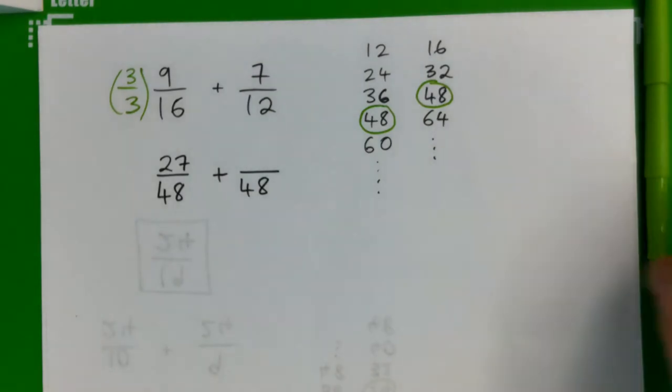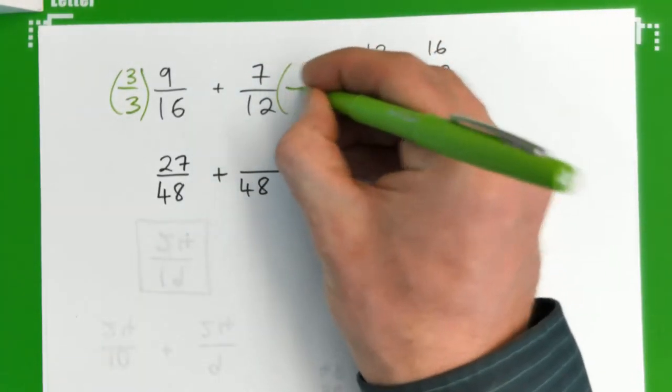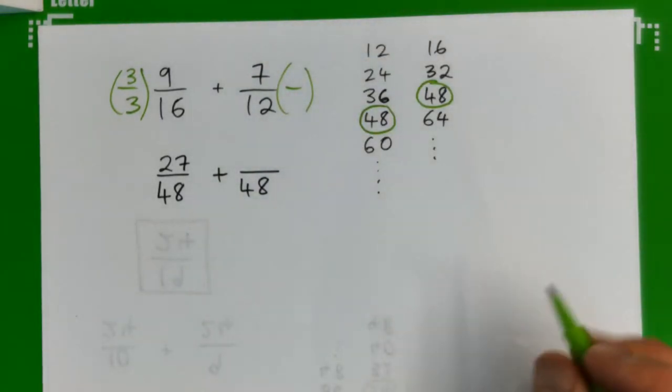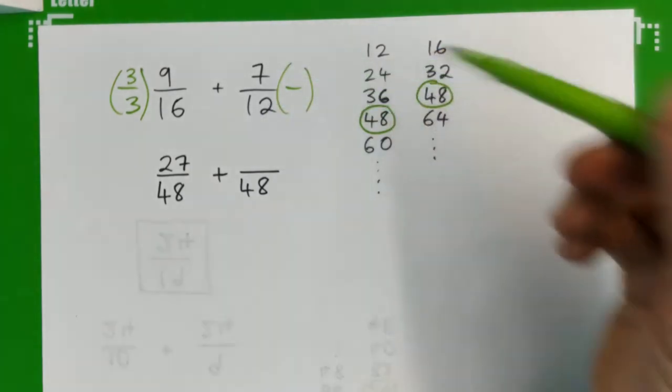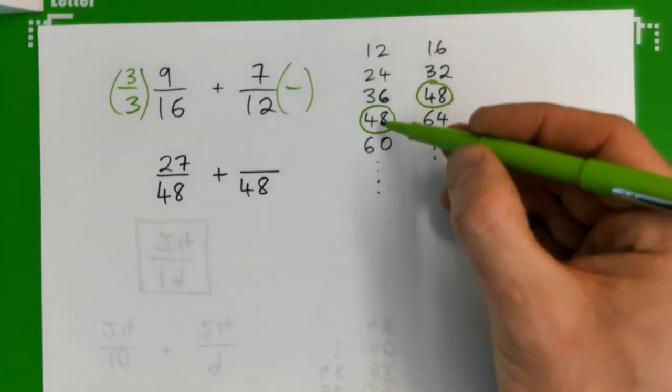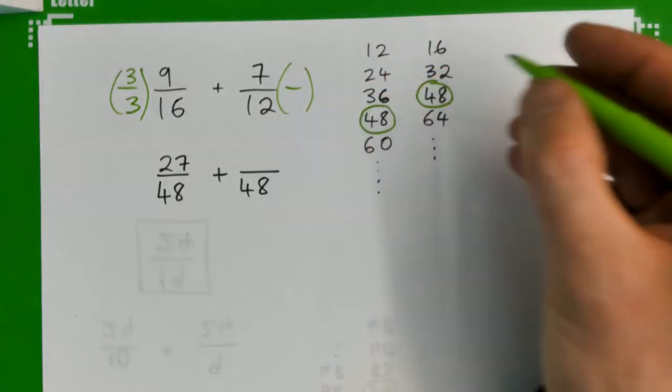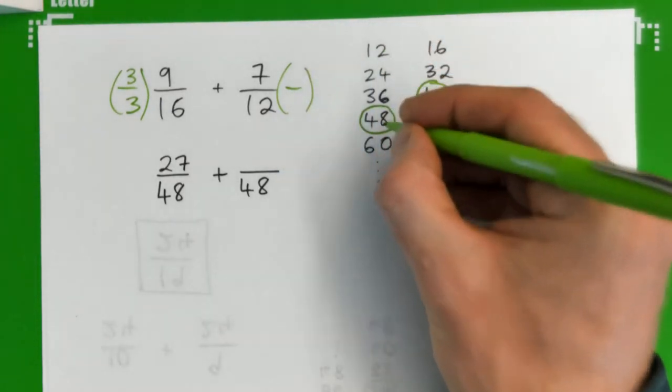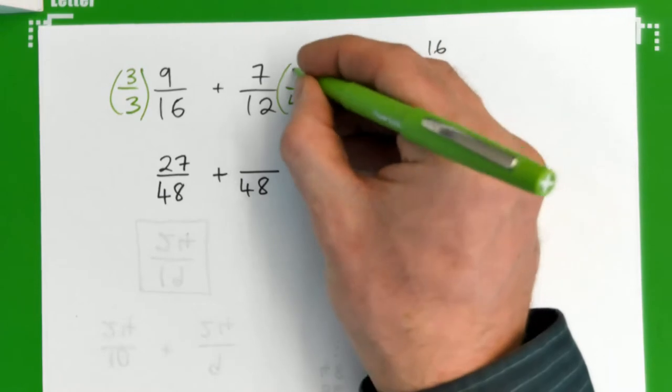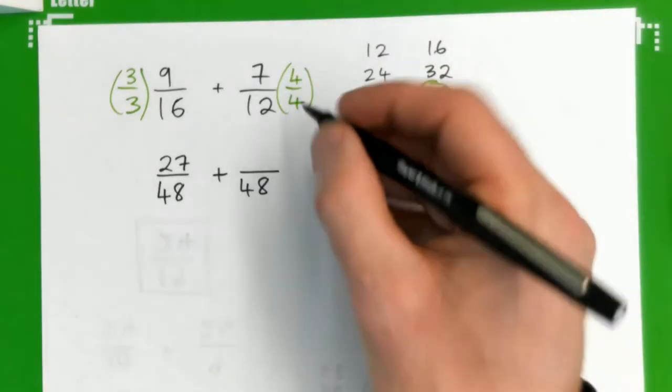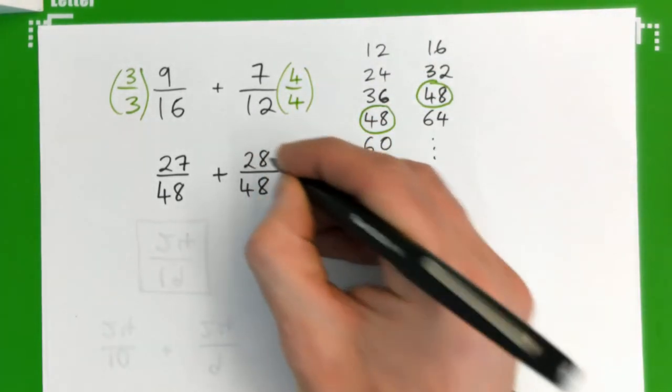And that's the same type of fraction. And 7/12 becomes what? 12 times what gives 48? 12 times 1, 2, 3, 4. So multiply 7/12 by 4/4 to get 28/48.